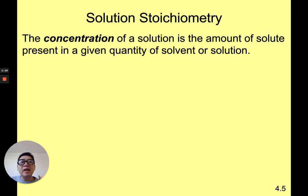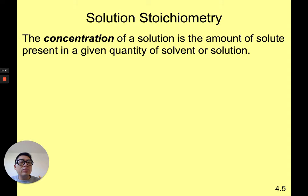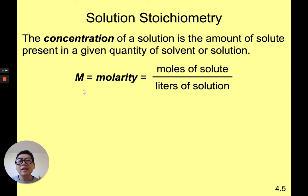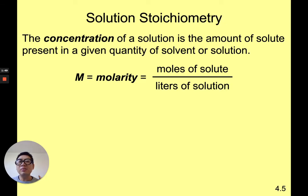So concentration is how much solute — how much stuff you're dissolving — for a given quantity of solvent. In this chapter we're doing aqueous solutions, so we're talking about something dissolved in water. The measurement of concentration we'll focus on is called molarity, the biggest and most common one. Another one is called molality, which we'll talk about later.